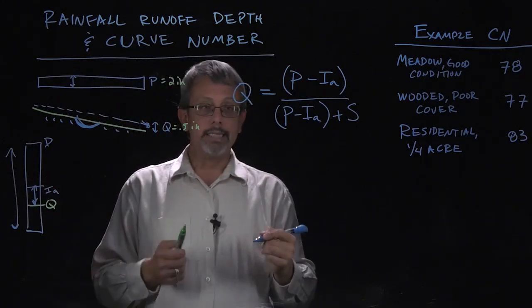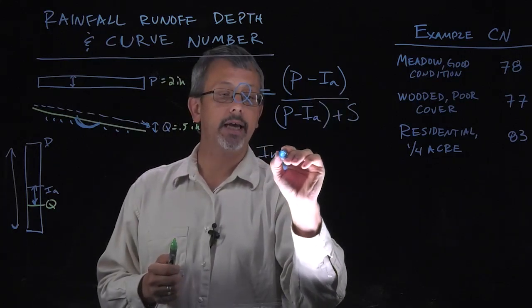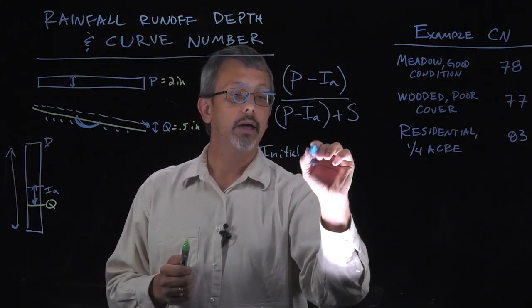We have our initial abstraction, Ia. Effectively, that is the amount of rainfall that gets soaked up or stuck or stays there, as a result of the area being dry or not able to store anything in the first place.